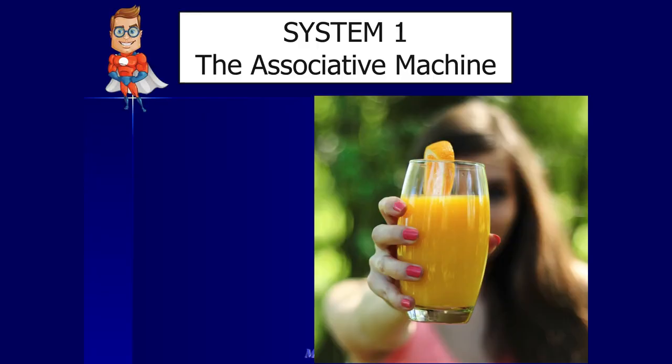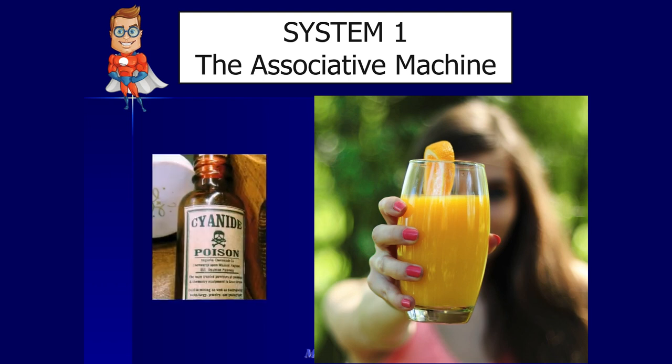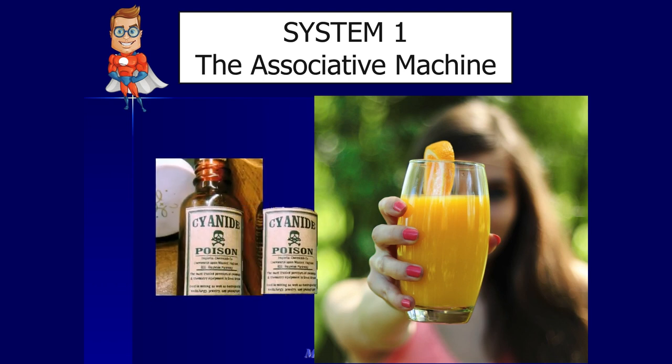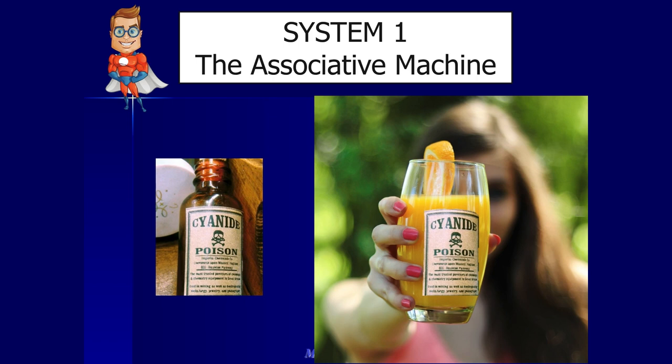For instance, if someone offered you a glass of orange juice, it looks delicious and you'll take it. But what if somebody took a ladle from a cyanide bottle and stuck it on your glass of orange juice? Now you've got a glass of orange juice with 'cyanide poison' written all over it. Would you drink it? Probably yes, because you know it's orange juice — you saw them pour it — but it's got cyanide written on the side of the glass, and it's going to make you feel a little bit uncomfortable because System 1 is looking at the cyanide and it's got certain associations built in to what that means.